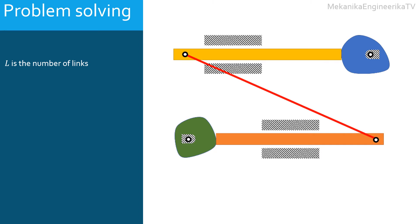Second, we need to determine J1, the number of lower pairs, or the number of joints allowing each 1 degree of freedom.